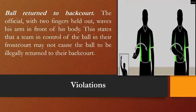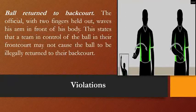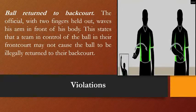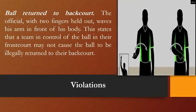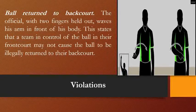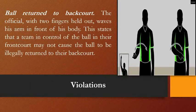Ball returned to backcourt: this violation happens when a team brings the ball from the frontcourt back to the backcourt. The official holds two fingers out and waves the arm in front of the body to signal that the team in control of the ball in their frontcourt may not cause the ball to be illegally returned to their backcourt. Once a player dribbles into the frontcourt, they are not allowed to bring the ball back, and they will be called for a backcourt violation.